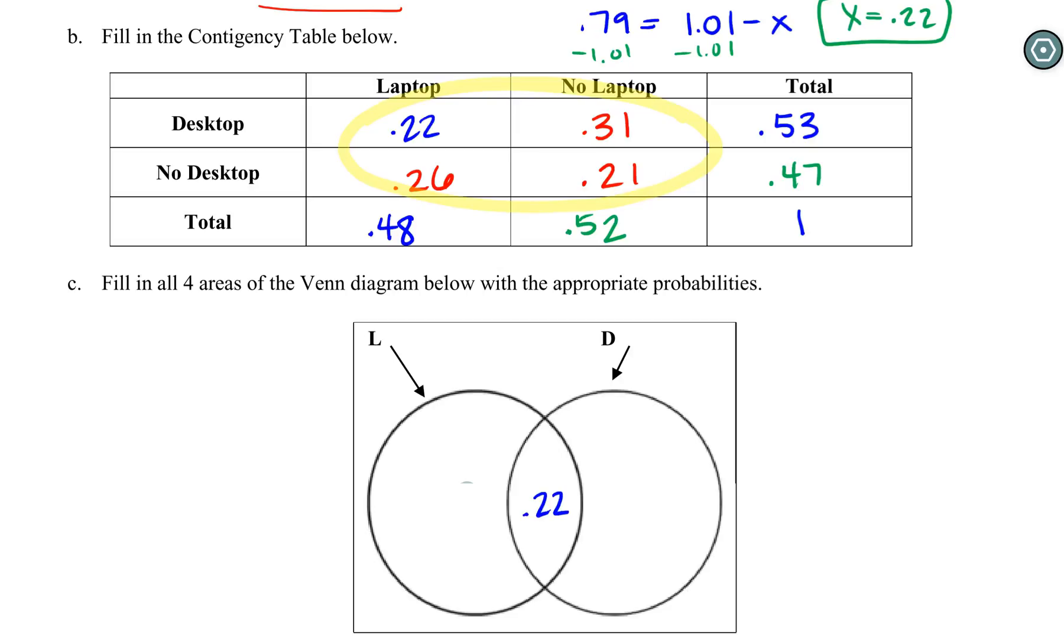0.22 is laptop and desktop, the intersection. This is laptop but not desktop, so 0.26. Here we have desktop but no laptop, so 0.31. Don't forget the fourth area on the outside—21% don't have a laptop or desktop. A way to check that you did this right is they should sum to one.